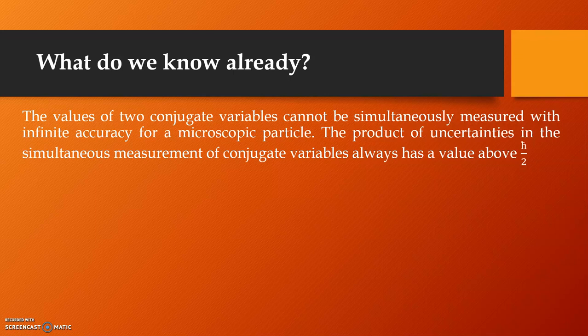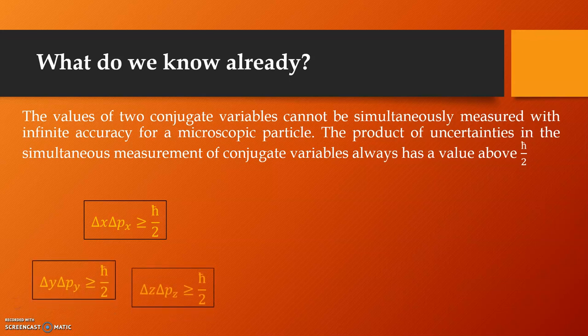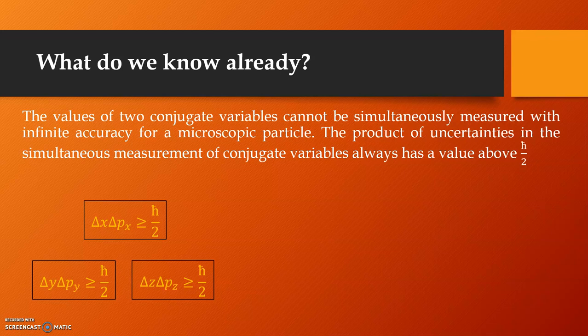The product of uncertainties in the simultaneous measurement of conjugate variables always has a value above h cut by 2. Coming up on the screen are the three equations or rather inequations which mathematically show the Heisenberg Uncertainty Principle in terms of position and momentum.